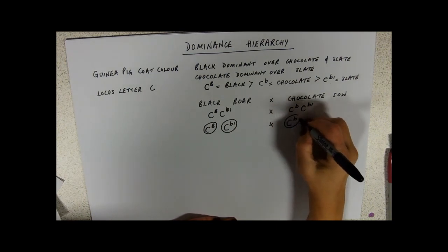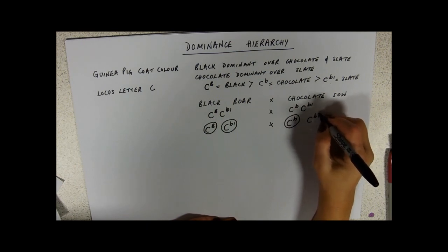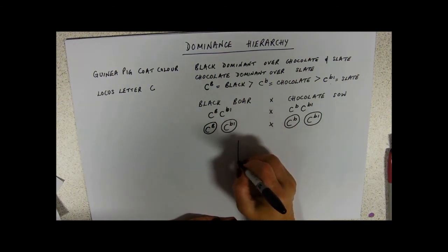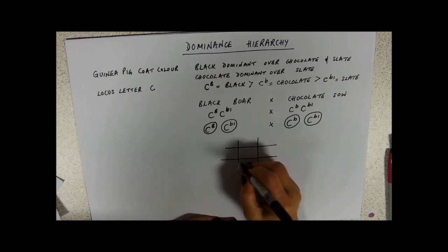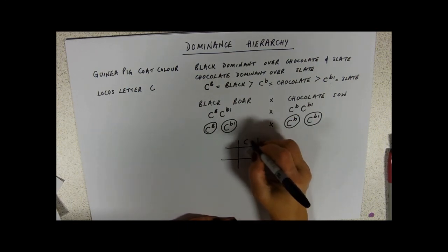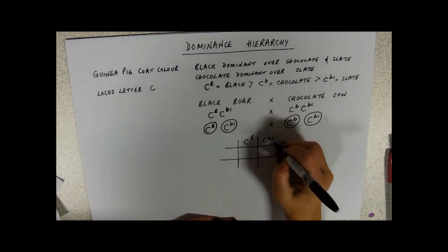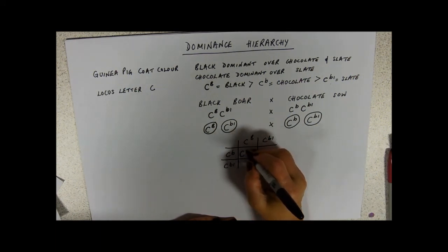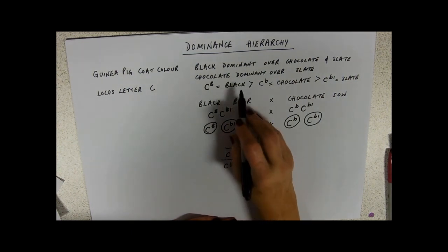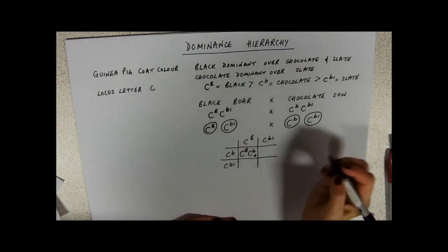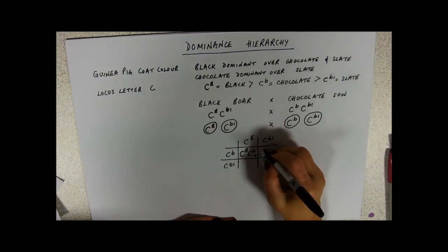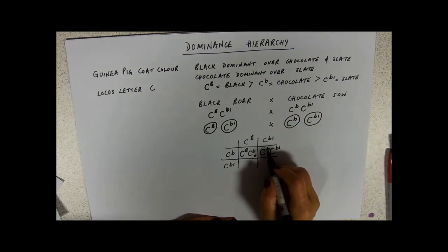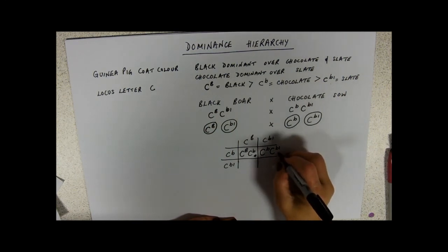And our sow is producing also two types of gametes. So, putting them into my Punnett square. Are you sick of seeing me drawing Punnett squares now? I'm kind of sick of drawing them. I'm going to put my boar on top. C B, C B one. So, C B, big B, C little B. Black dominant over chocolate. I'm going to get a black piglet. Ha ha! I'm going to get this one, C B, chocolate, dominant over slate. This one's going to be chocolate.